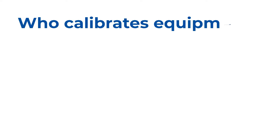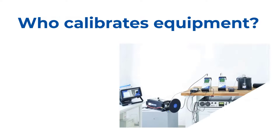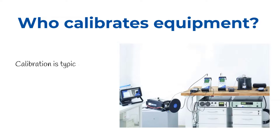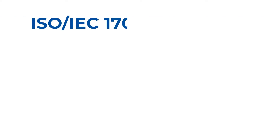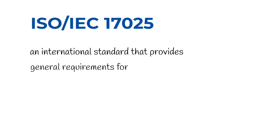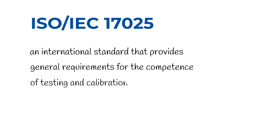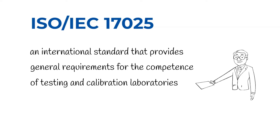To ensure that the instrument is reliable, calibration is typically done in a laboratory where conditions are controlled. The calibration will stay accurate under the same conditions it was calibrated in. The ISO IEC 17025 is an international standard that provides general requirements for the competence of testing and calibration laboratories.